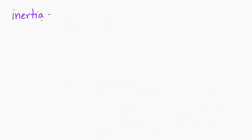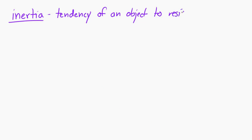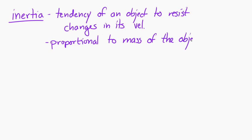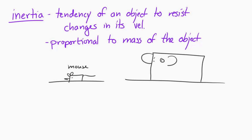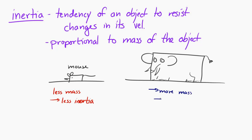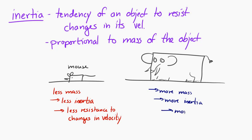This relates to a concept called inertia — the tendency of an object to resist changes in its velocity. Inertia is proportional to the mass of an object, so more mass means more inertia. For example, a mouse has less mass and therefore less inertia, making it easier to change its velocity. An elephant has more mass, more inertia, and more resistance to changes in velocity — so it's relatively difficult to change the elephant's velocity. Mass is a measure of inertia.